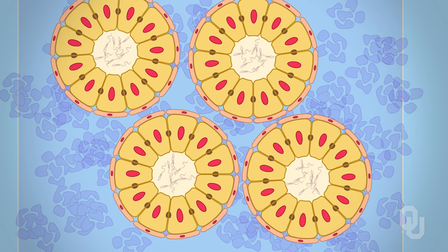In order to do this, we need to zoom in on the seminiferous tubule and take a cross section through the tubule. Imagine taking a garden hose and cutting it in half — this would be similar to cutting the tubule in half and looking at what's inside. The lumen of the seminiferous tubule is lined by cells called Sertoli cells. These Sertoli cells are connected via tight junctions. Lining the outside of the Sertoli cells is a layer of smooth muscle.